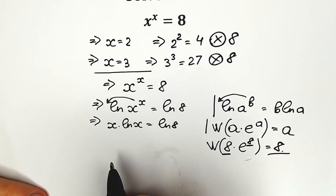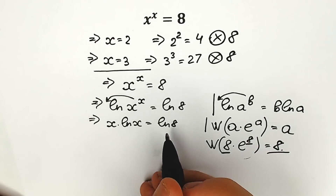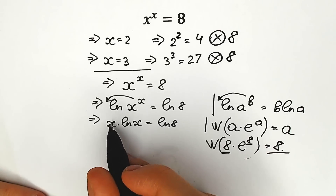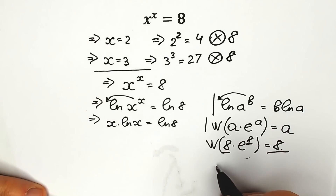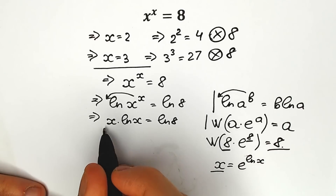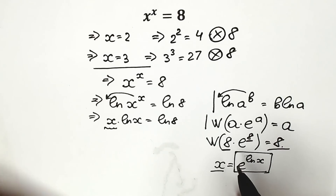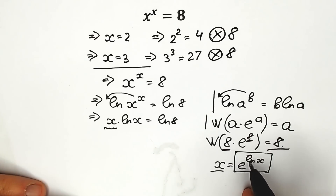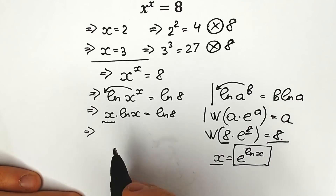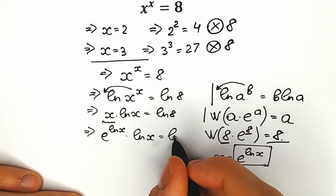Let's look at our expression on the left side and create the form needed for Lambert W. We need an e. This x can be expressed in terms of e — we can write x as e to the power natural log x, which is absolutely the same thing, because e and natural log cancel by the basic property. So we have e to the power natural log x, times natural log x, equal to natural log 8. Since multiplication is commutative, we rewrite: natural log x times e to the power natural log x equals natural log 8.